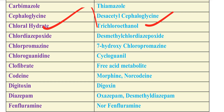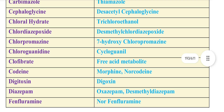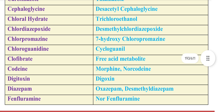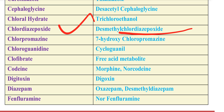Chloral Hydrate metabolizes to Trichloroethanol 1-4. Chlordiazepoxide's metabolite is Desmethyl Chlordiazepoxide — that is the chlordiazepoxide desmethyl metabolite.